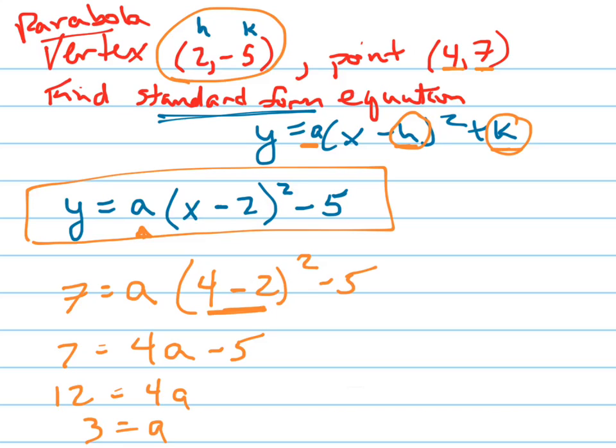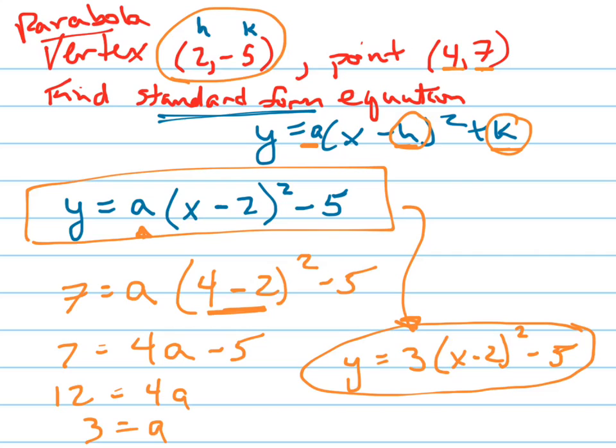It's a positive 3. So now I rewrite my equation. Here's my answer: Y equals 3 times X minus 2 squared minus 5. And that's the answer in standard form.